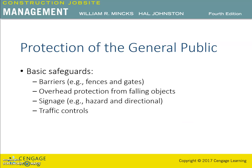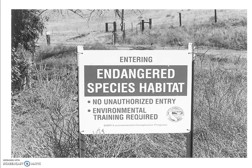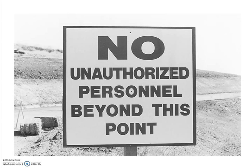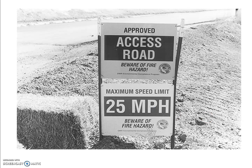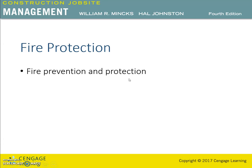Additional safeguards include traffic controls, security and surveillance, and walkway protection with solid walls for protection from blind objects. For example, safety signage may indicate endangered species habitat, no unauthorized personnel beyond this point, approved access road, maximum speed limit, and restricted entry. Most urban areas have regulations about sidewalk protection, walkways, and vehicle access into and out of the site.